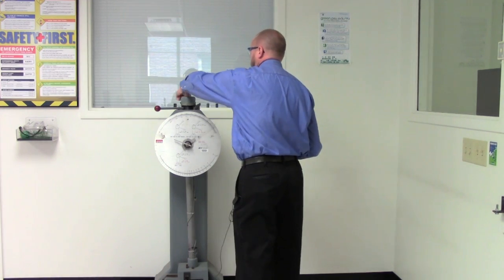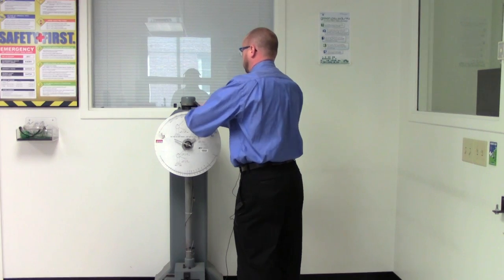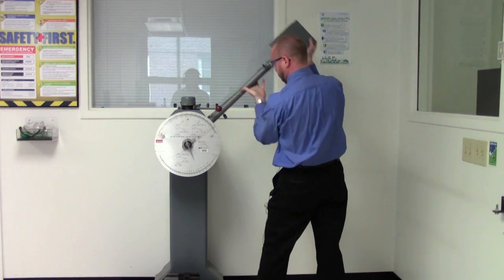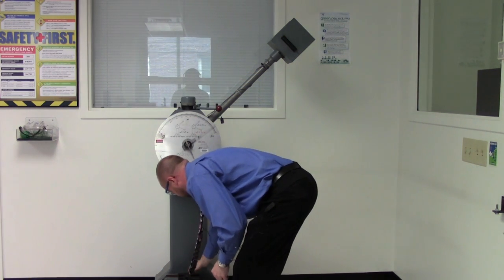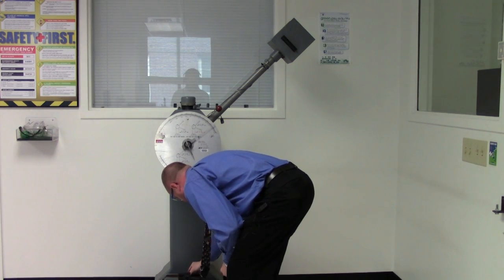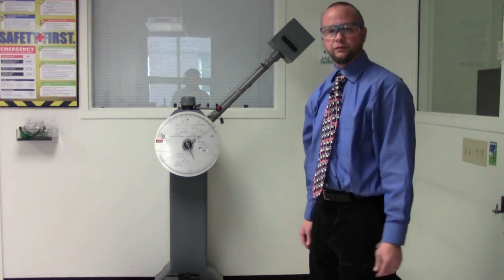And so let's load up our sample again. OK. All right. So this is our brittle form of the metal.